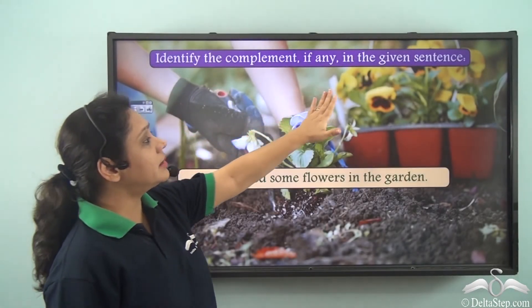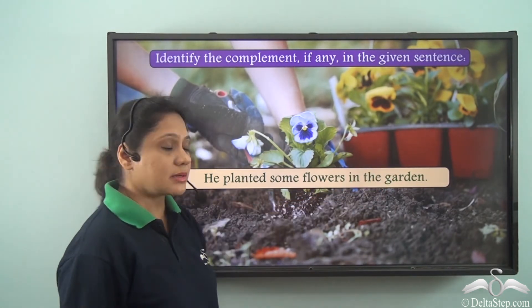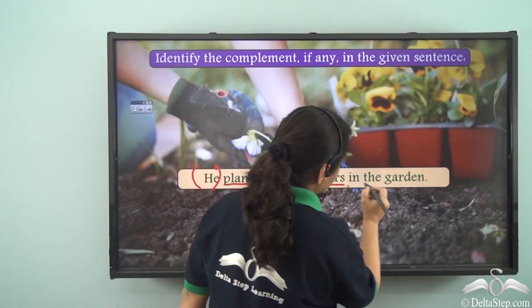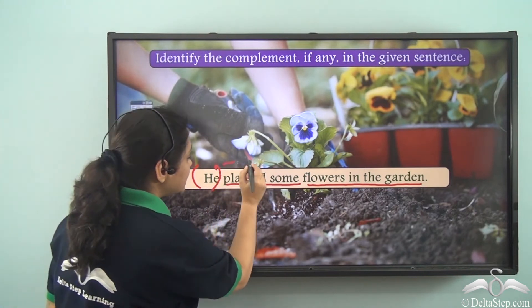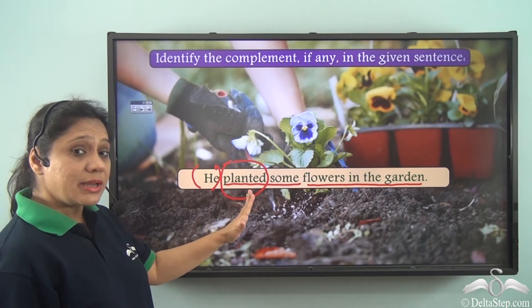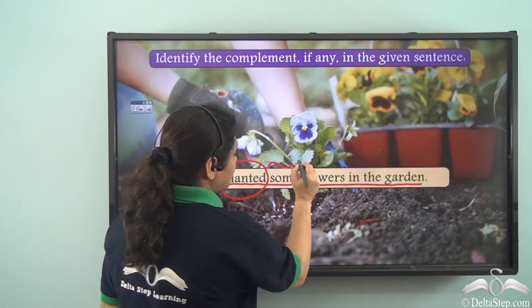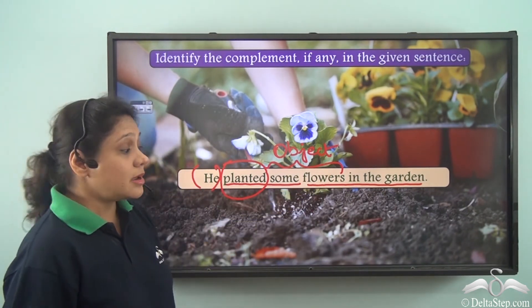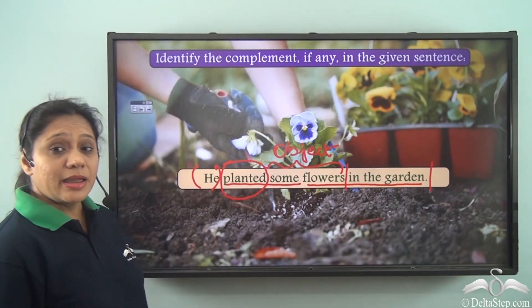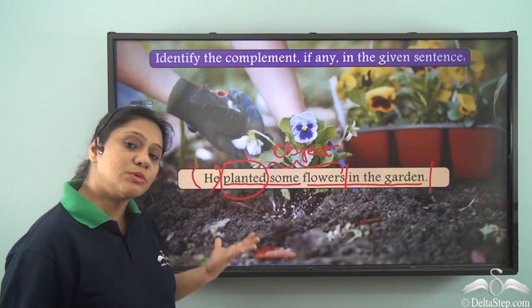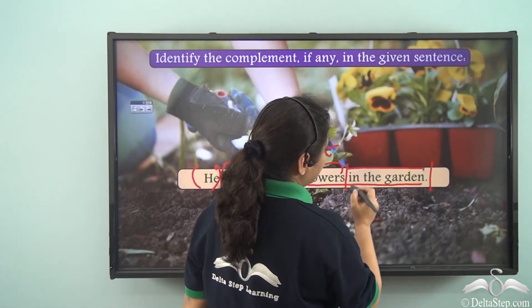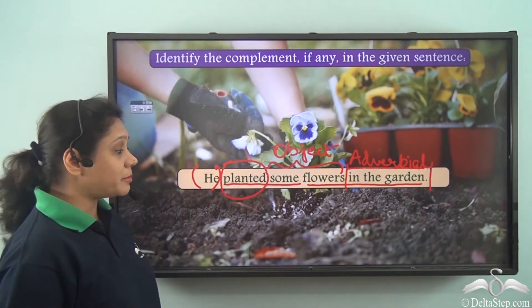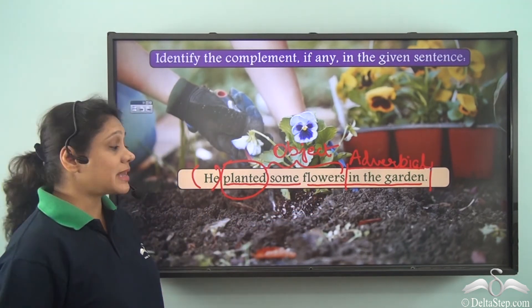Now identify the complement, if any, in: He planted some flowers in the garden. The subject is 'he' and the predicate is 'planted some flowers in the garden'. The verb is the transitive verb 'planted' — planted what? Some flowers. So 'some flowers' is the object. If I say 'he planted some flowers', the sentence makes complete sense. Hence 'in the garden' is not a complement but an adverbial, giving extra information about where he planted some flowers. This sentence has no complement.